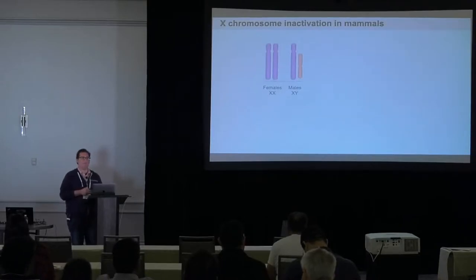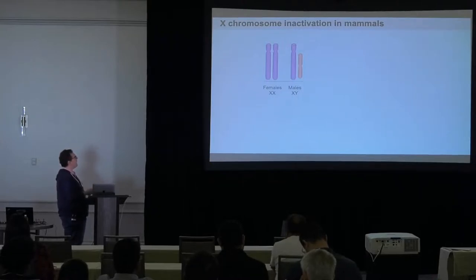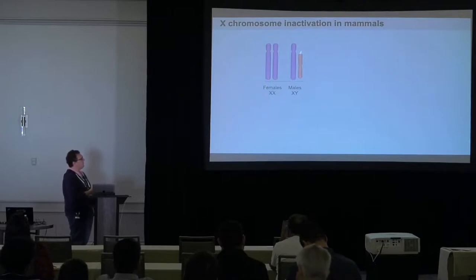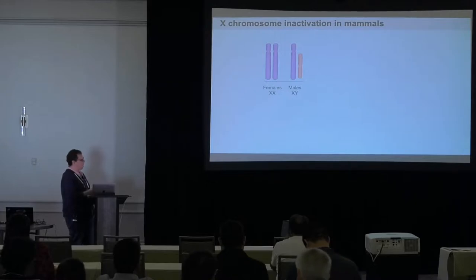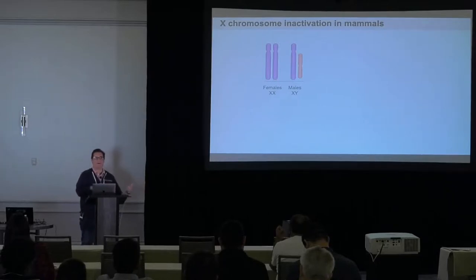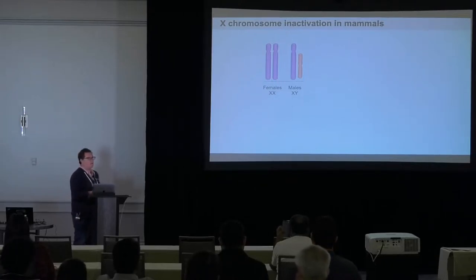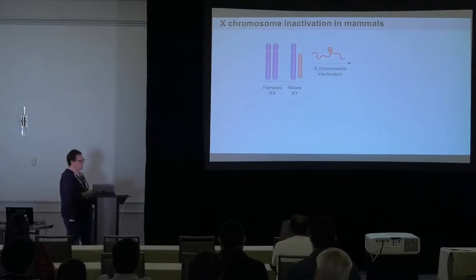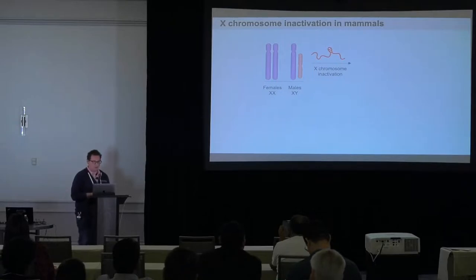My lab, for the last 10 years, has been studying X chromosome inactivation. Female mammals have two X chromosomes, males have one and a Y chromosome. The X chromosome contains many important protein-coding genes that have nothing to do with sex determination, creating a dosage imbalance between males and females. Pretty much every organism with sex chromosomes has some mechanism to achieve dosage balance between the sexes.